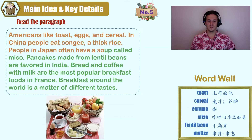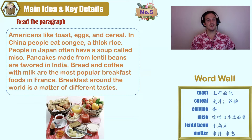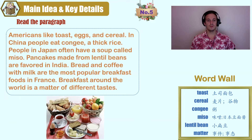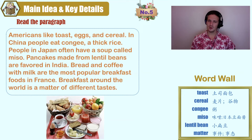Americans like toast, eggs, and cereal. In China, people eat congee, a thick rice. People in Japan often have a soup called miso. Pancakes made from lentil beans are favored in India. Bread and coffee with milk are the most popular breakfast foods in France. Breakfast around the world is a matter of different tastes.